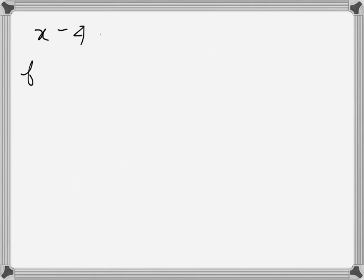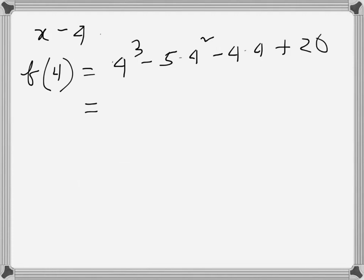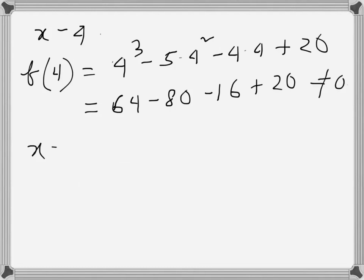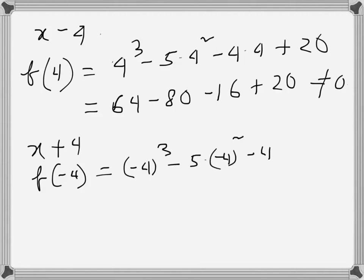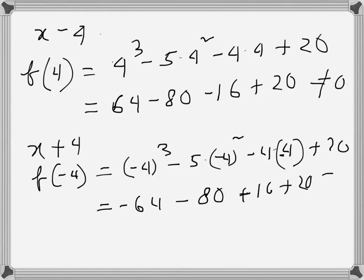We try x-4: f(4) = 4³ - 5(4²) - 4(4) + 20 = 64 - 80 - 16 + 20, which is not 0. Then x+4: f(-4) = (-4)³ - 5(-4²) - 4(-4) + 20 = -64 - 80 + 16 + 20, which is also not 0. So neither x-4 nor x+4 is a factor.